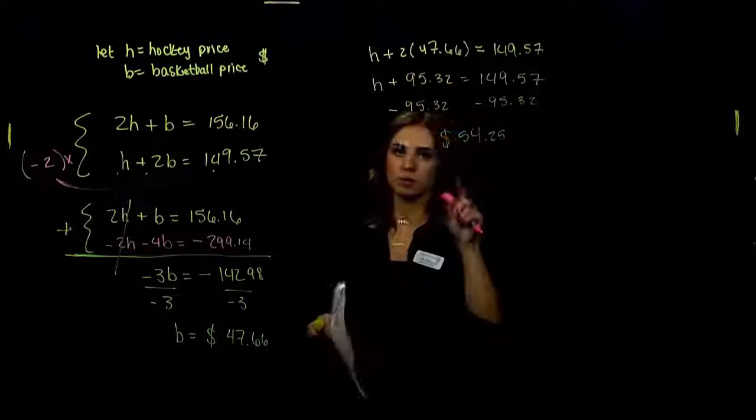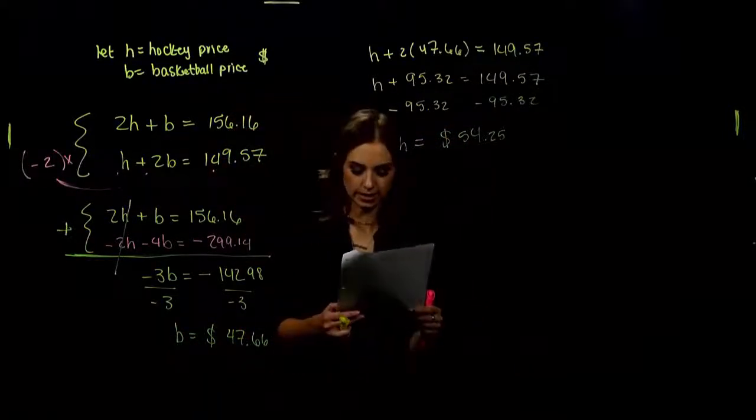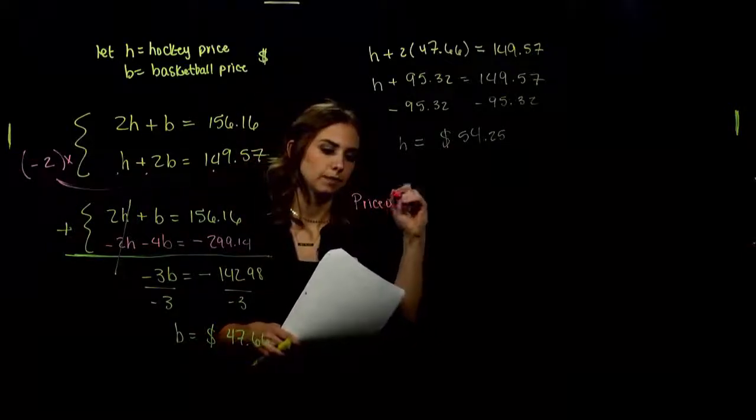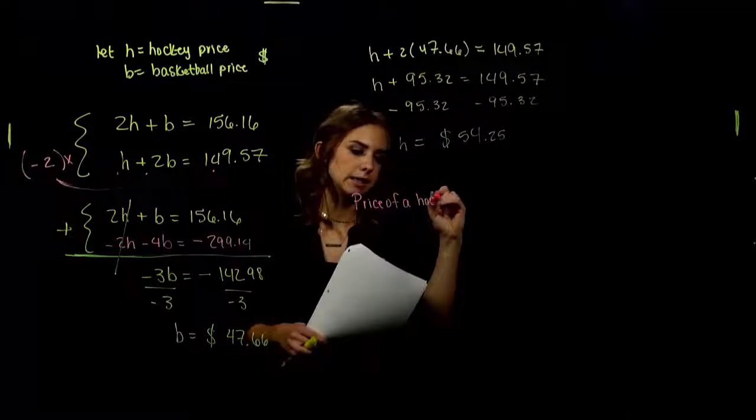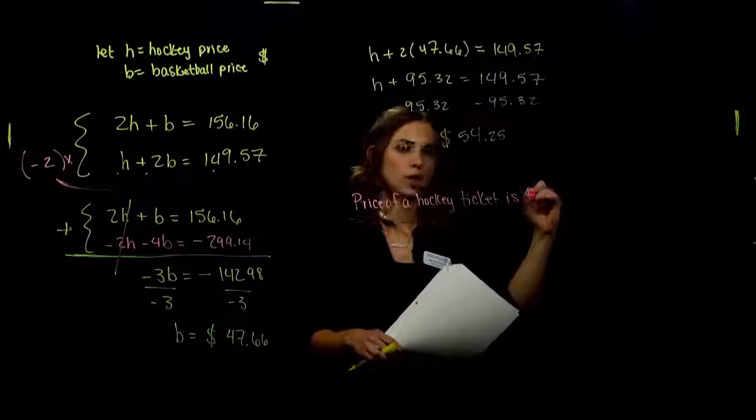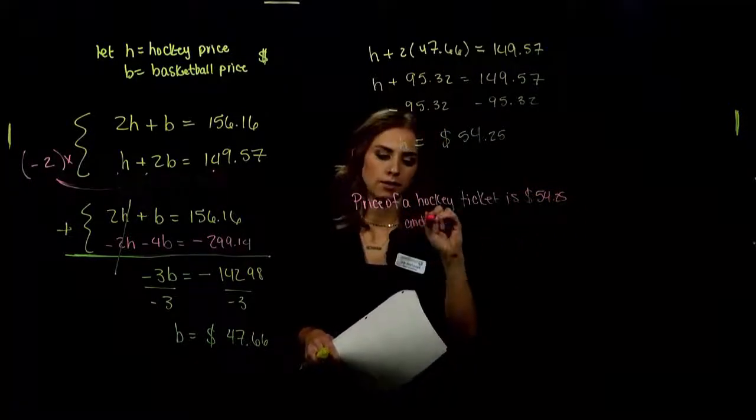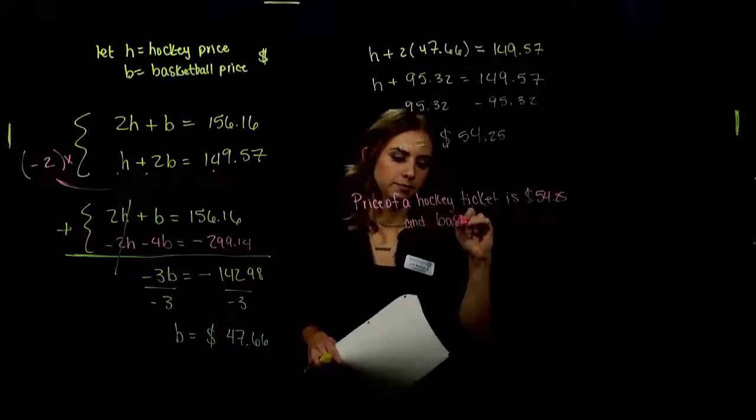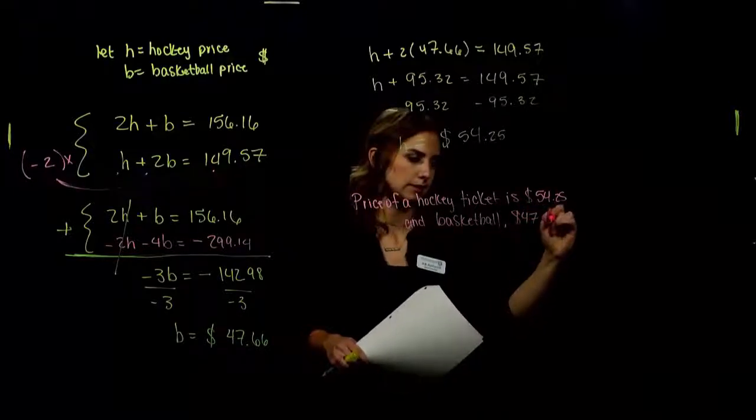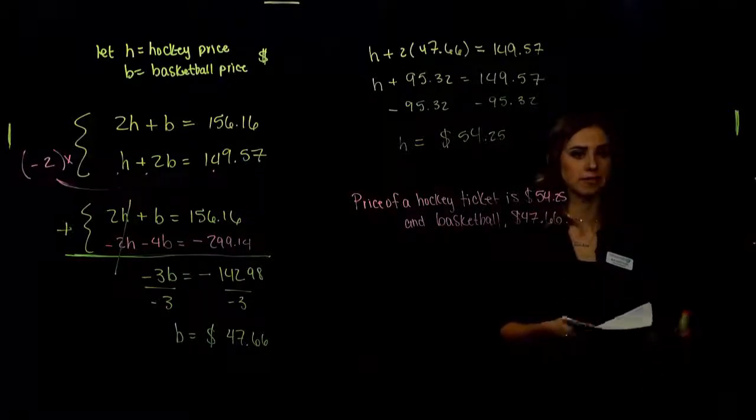How could we check them? Plug in both of the values into both equations. Make sure they're satisfied. And at the end, we write a little sentence. So the price of a hockey ticket is, or was, in the past now, $54.25. And basketball, $47.66. Again, we could check, plug them into both equations. Make sure they're both satisfied.